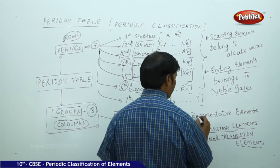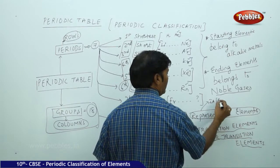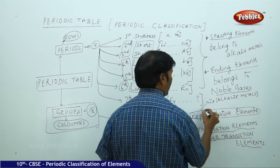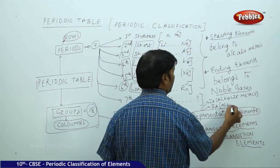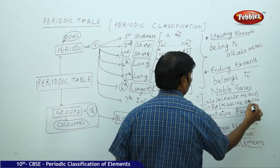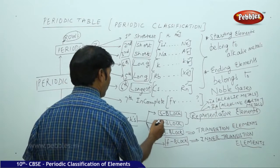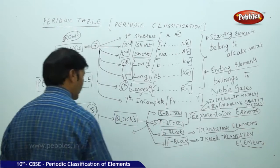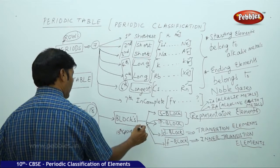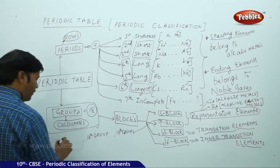In the S-block, among the representative elements, group 1A contains the alkali metals and group 2A contains the alkaline earth metals. In the P-block, it is made up of groups 13, 14, and 15 onwards.